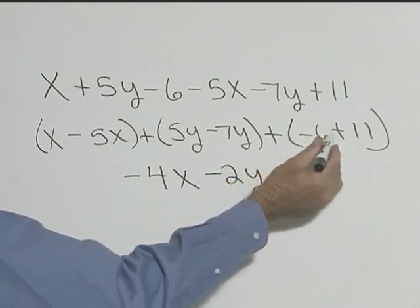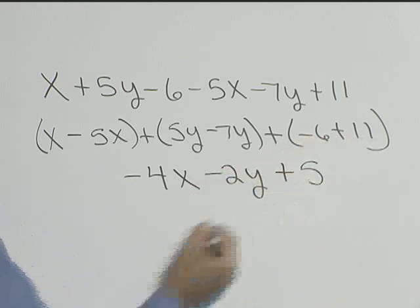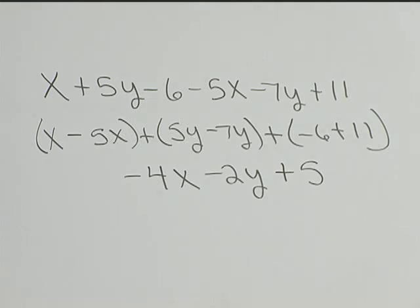And then we have negative 6 plus 11, which gives us positive 5. So combining like terms, we get negative 4x minus 2y plus 5.